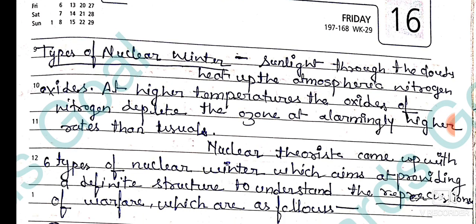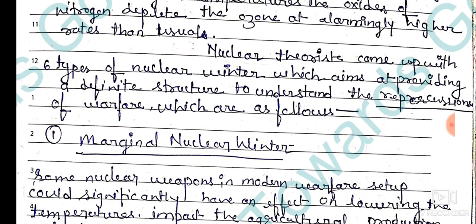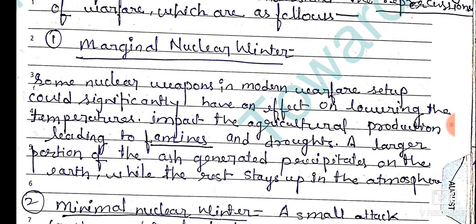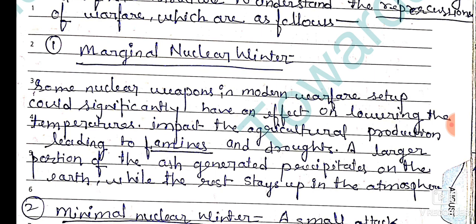Next is the types of nuclear winter. Sunlight through the clouds heats up the atmosphere and excites nitrogen. At higher temperatures, the oxides of nitrogen deplete the ozone at alarmingly higher rates than usual. Nuclear theorists came up with six types of nuclear winter, which aim to provide a definite structure to understand the repercussions of warfare.